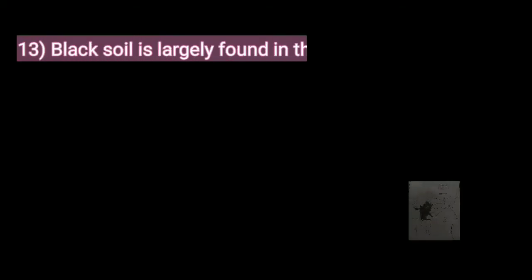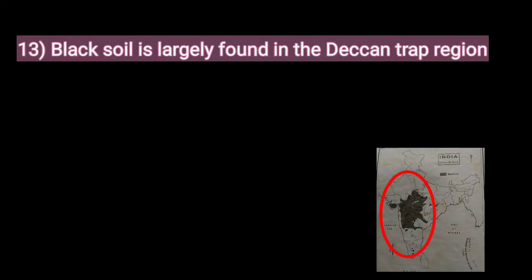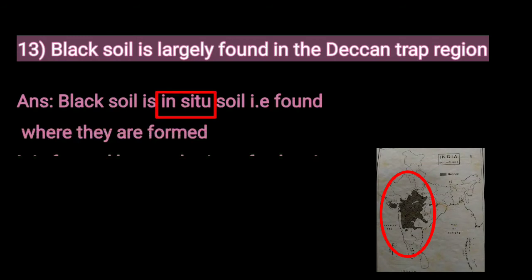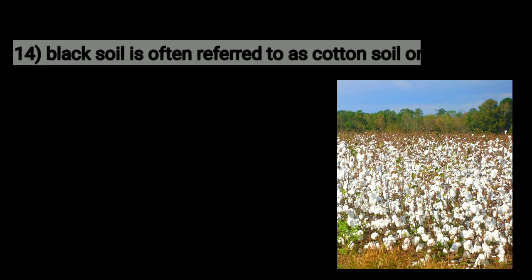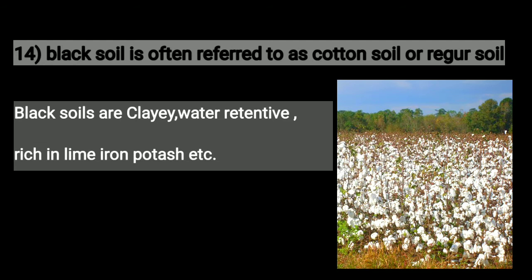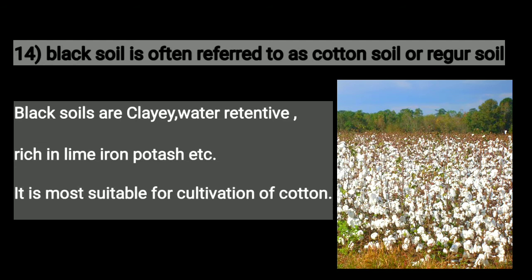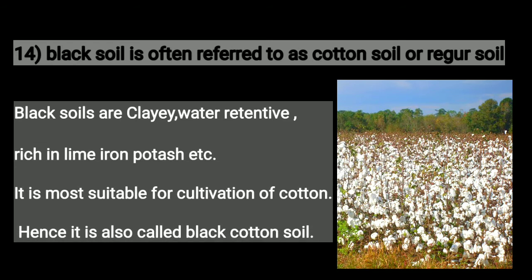Give reason: Black soil is largely found in the Deccan Trap region. Black soil is an in-situ soil, found where it is formed. It is formed by weathering of volcanic rock from Deccan lava, hence it is largely found in the Deccan Trap region. Black soil is often referred to as cotton soil or regur soil. It is clayey, water-retentive, and rich in lime, iron, and potash, making it most suitable for cultivation of cotton. Hence it is also called black cotton soil.